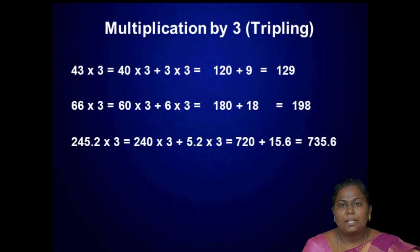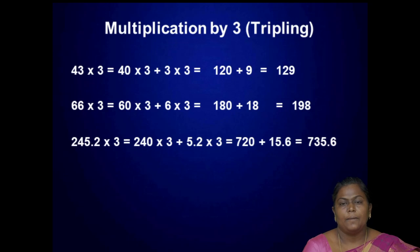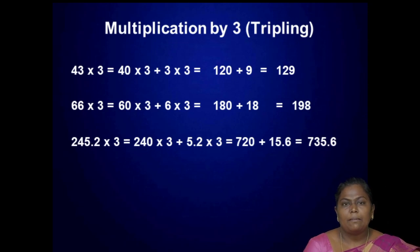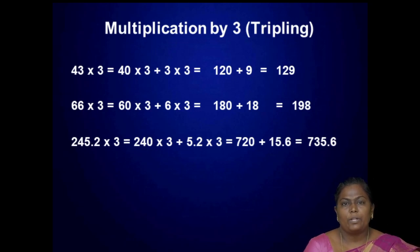Next, multiplication by 3, which is tripling. You have to triple the given number. For example, taking 43 multiplied by 3: 43 can be taken as 40 plus 3, so 40 into 3 plus 3 into 3, which is equal to 120 plus 9, which is equal to 129.